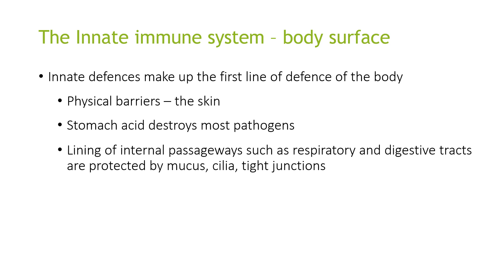The innate defences make up the first line of defence of the body. These include physical barriers such as the skin, stomach acids which destroy many pathogens, and the lining of internal pathways such as the respiratory and digestive tracts, which are protected by mucus, cilia and tight junctions.